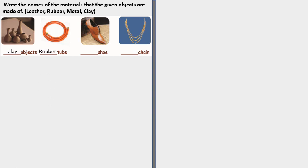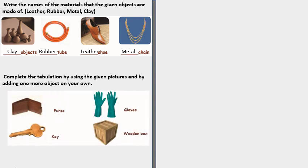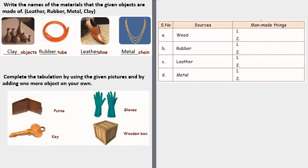Write the names of materials that the given objects are made out of. Leather, rubber, metal and clay. So the first picture is clay object. Second one is rubber tube. Then we have leather shoes and metal chain. Complete the tabulation by using the given pictures and by adding one more object on your own. First source is wood. For wood we have wooden box and table. Then we have rubber, gloves and tires, leather, purse and belt and then we have metal, key and tap.